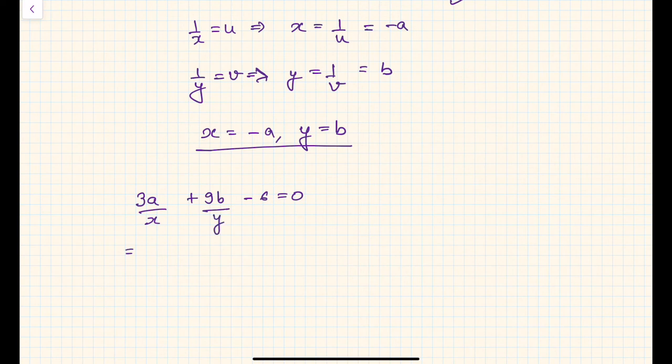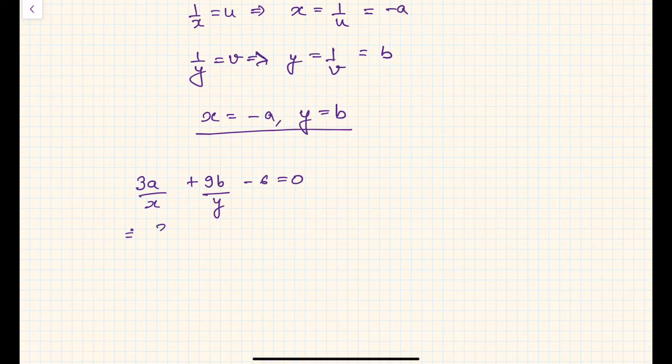This is nothing but 3 times a divided by x is minus a, plus... actually let me correct. It's 3 divided by minus a, which is minus 3, plus 9 times b divided by b minus 6, which equals minus 3 plus 9 minus 6, which equals 0.